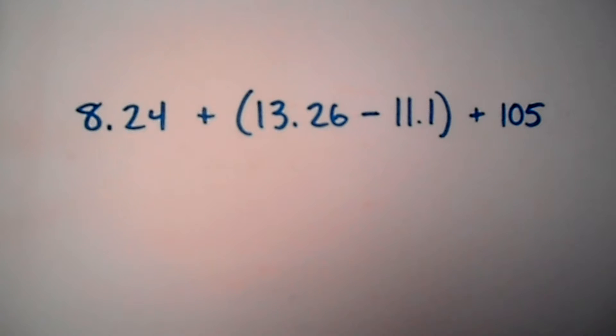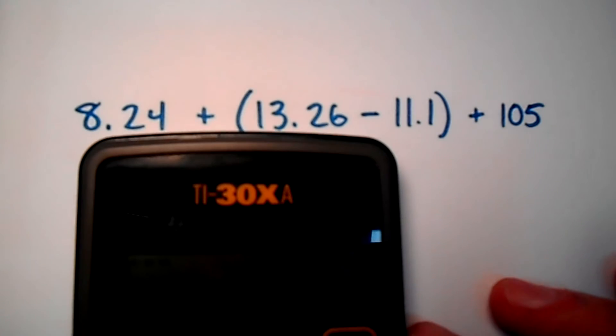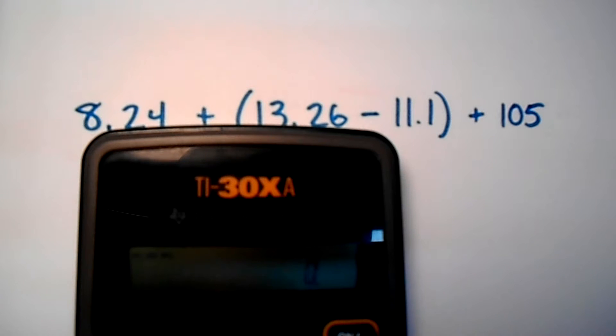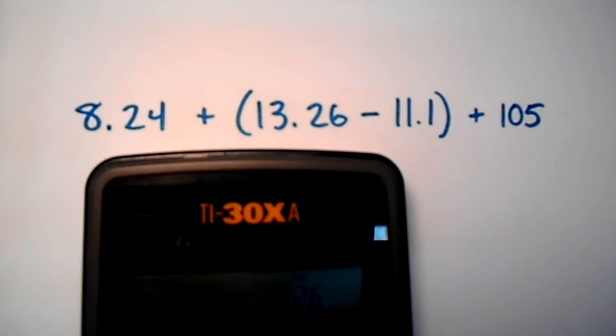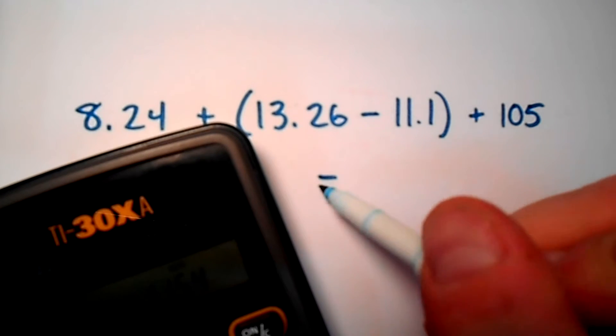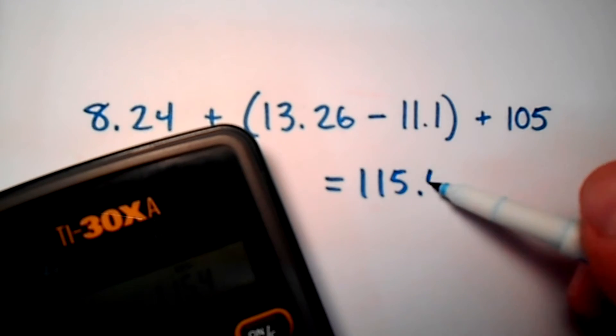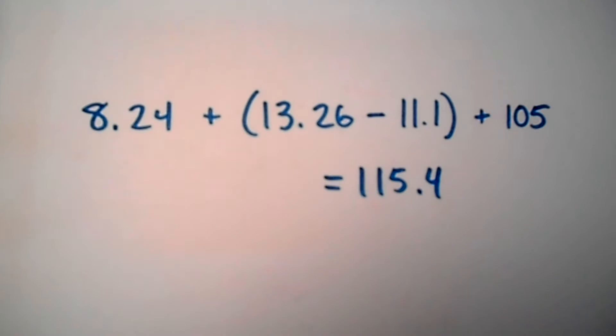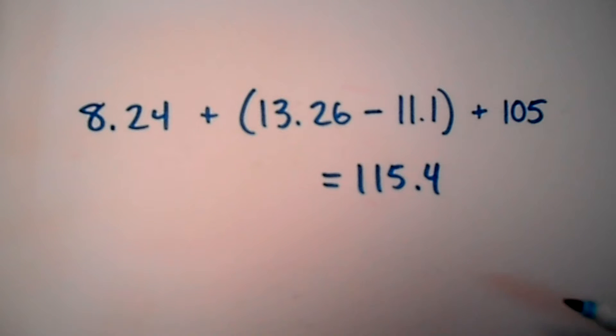If you know your order of operations, these parentheses don't really mean anything. I can add and subtract these in any order, and when I get to the end, that's when I'm going to round. You don't want to do any in-between rounding because everything involved is addition and subtraction. We've got 8.24 + 13.26 - 11.1 + 105. Our raw answer is 115.4. I don't know what the units are—we didn't give units to this problem—but that's my value: 115.4.